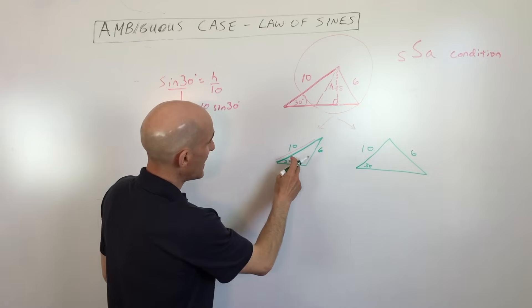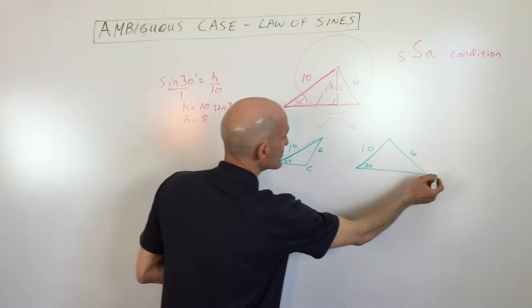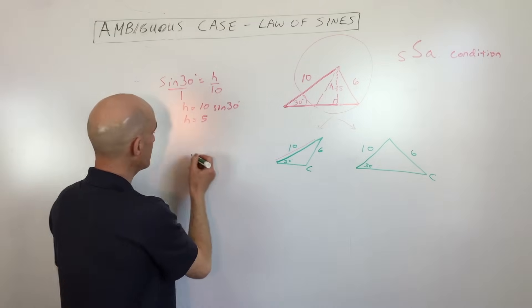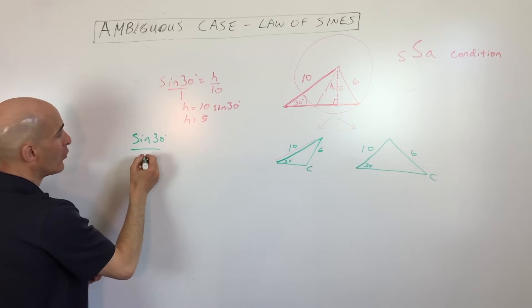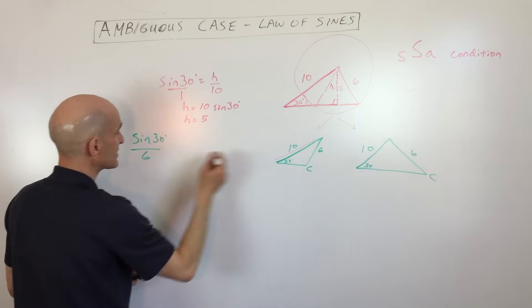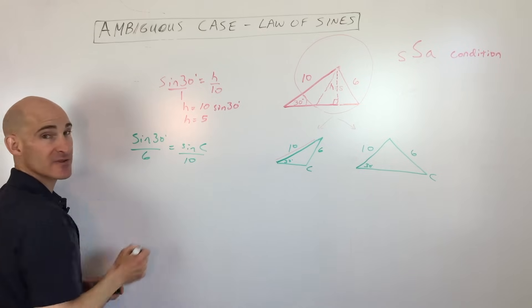And so we're going to say the sine of thirty divided by six equals the sine of c, we'll call this angle over here c, divided by ten. So let's go ahead and calculate that. So sine of thirty over the side opposite six equals the sine of angle c over its side opposite ten.